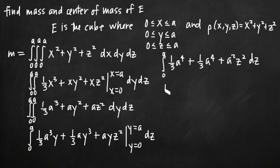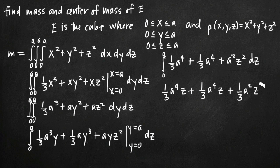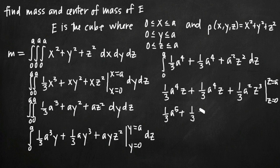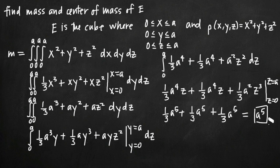Now we integrate with respect to z and get 1/3 a to the fourth times z plus 1/3 a to the fourth times z plus 1/3 a squared z cubed, evaluated on the interval z equals 0 to z equals a. Plugging in a for z: 1/3 a to the fifth plus 1/3 a to the fifth plus 1/3 a to the fifth. Simplifying, we get a value for the mass of a to the fifth. That's the mass of this volume E.